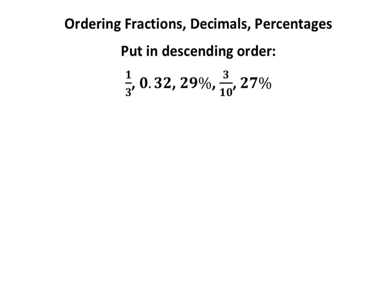Right, we're ordering fractions, decimals, percentages, and we're putting them in descending order. So descending means from biggest to smallest, highest to lowest, however you want to put it.